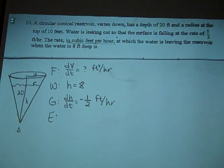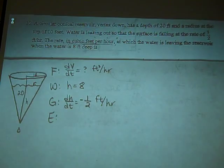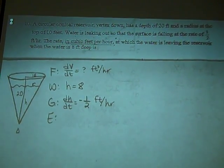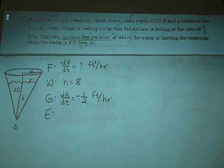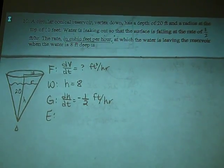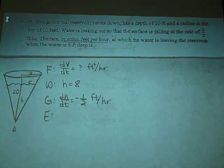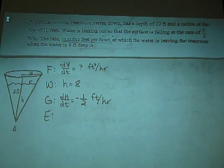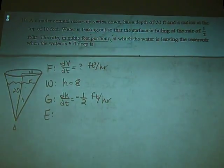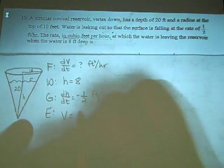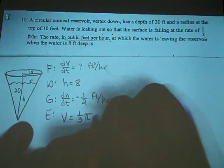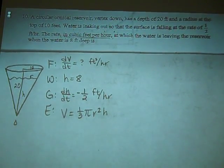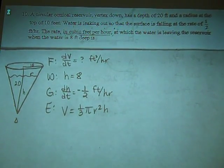And now you need something that connects volume to height using our picture and radius. Volume of a cone. They didn't give it to you. One third. Volume of a cone is one third pi r squared h. There will be no formula charts on the AP exam. Know it.